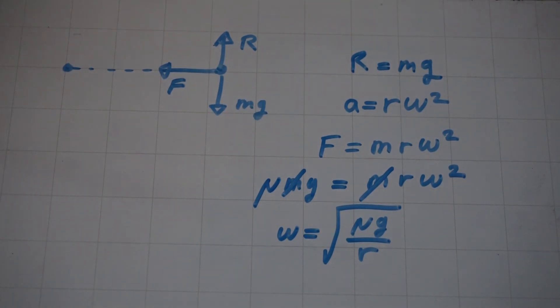Straight away we can see that this expression for omega is independent of mass, which explains why the two coins of different masses slip at approximately the same angular speed.